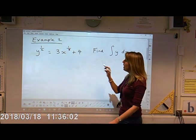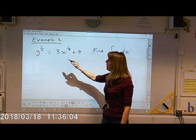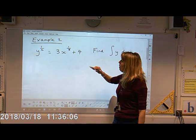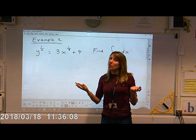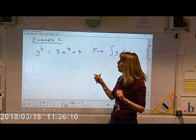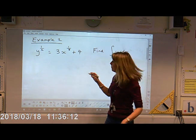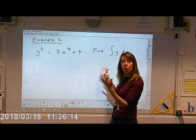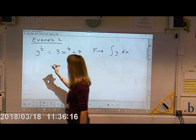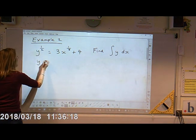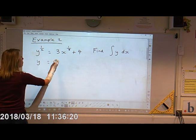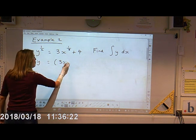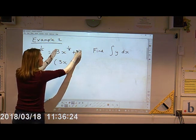Right, example two. Here we've been given Y to the power of half equals. I don't like having a square root of Y here, so I'm going to get rid of it. And to do that I'm going to have to square both sides. So Y equals, remember we're going to have to square all of this.